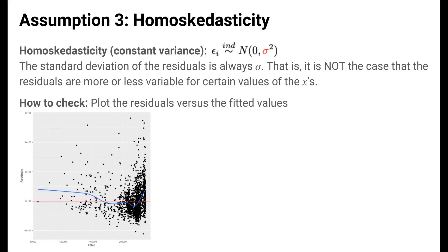We can check this with the same plot we used for checking the trend assumption, plotting the residuals versus the fitted values. This time, we look to see if the points are more spread out vertically in certain regions of the x-axis. This would indicate that the residuals are more variable in some cases than in others.